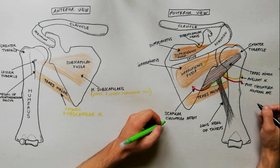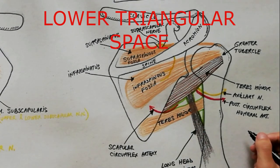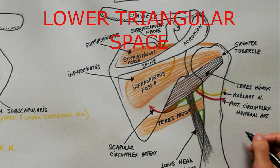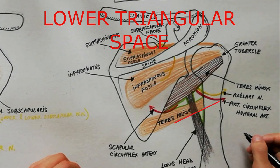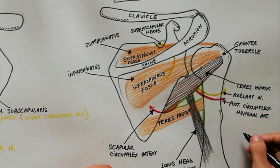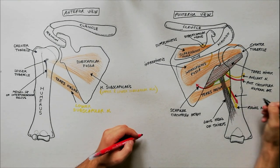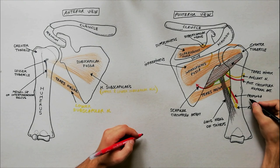The third and last space to be indicated is the lower triangular space. It is bounded as follows: superiorly by the teres major, laterally by the shaft of humerus, and medially by the long head of triceps. The structures passing through this space are the radial nerve and the profunda brachii artery and vein.